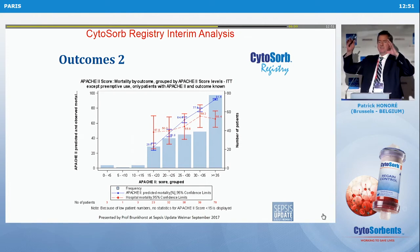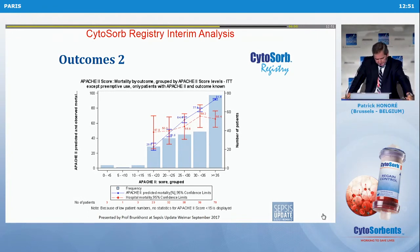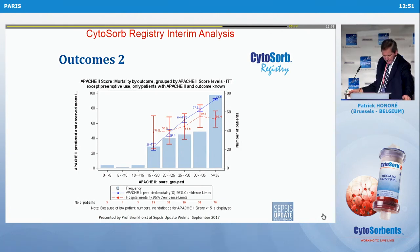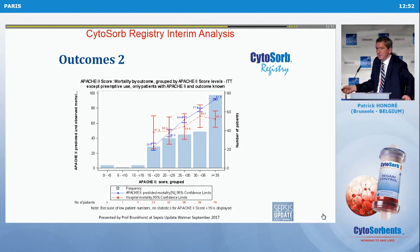There is also a big European registry where all cases are compiled, run by Frank Brankhorst, a well-known expert in sepsis. He made a presentation recently about the correlation between hospital mortality (red line) and APACHE 2 predicted mortality (blue line). In less sick patients there is almost no difference, but in sicker patients — APACHE 2 between 30-35 and above 35 — there is a relative reduction between observed and predicted mortality of 40%. Very impressive and something to bear in mind.